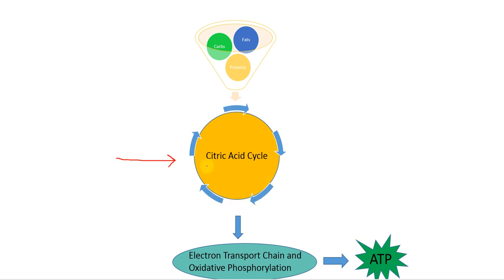And then after the citric acid cycle, the products of the cycle will enter the electron transport chain and oxidative phosphorylation in order to make ATP. Remember, we eat these things for energy, but our cells can only use ATP for energy. So we have to convert this energy from food into ATP energy for our cells.